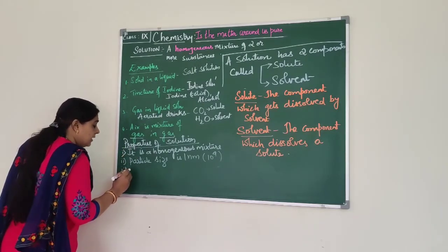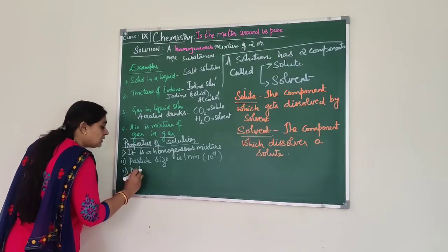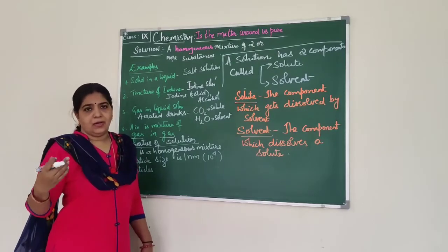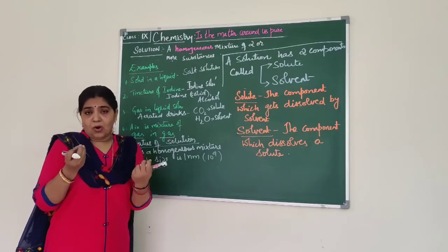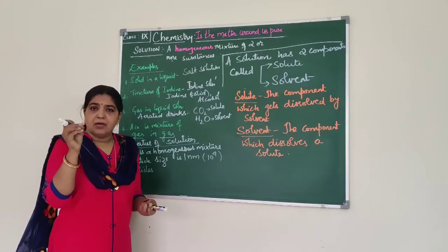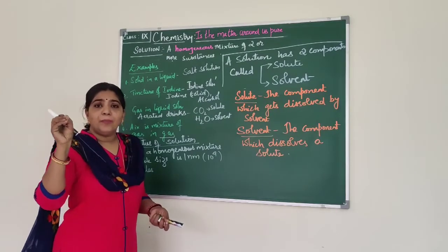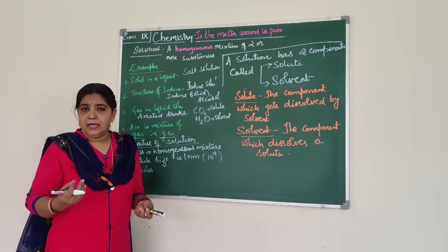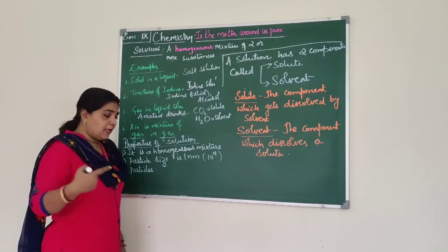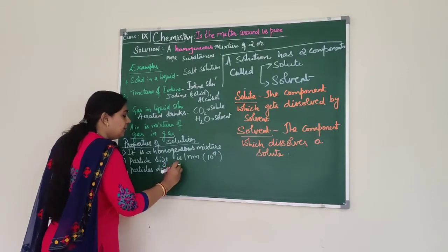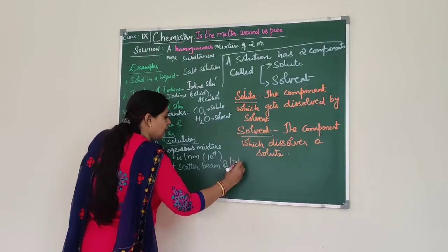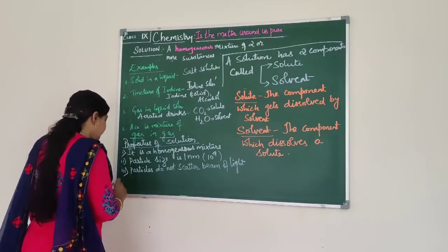The particle diameter in solution is about 1 nanometer — so tiny and minute that we cannot see with our naked eye. When you pass light through this solution, the particles do not scatter the beam of light. Because of this, we cannot see the path of the light through the solution.